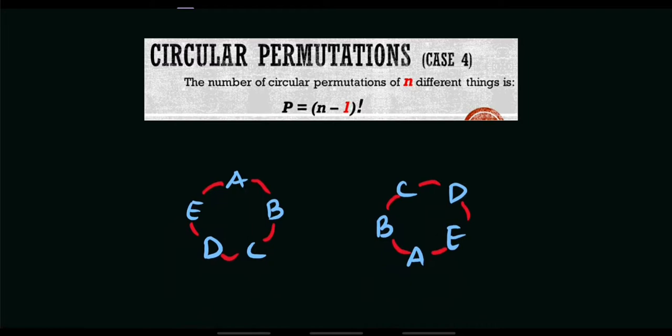So that is n minus 1 factorial. That's the simplest formula we have. For example guys, let's say we are asked to arrange 5 sets of letters A, B, C, D, and E. So I have here 2 sets of figures wherein I arranged A, B, C, D, and E into circular form.